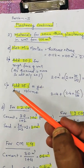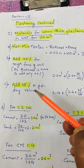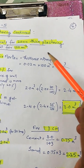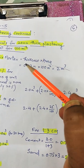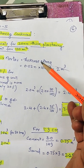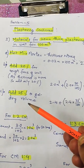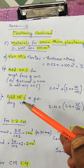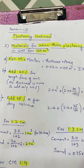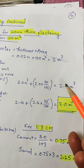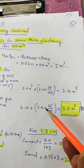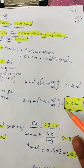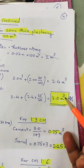The next step, step C, is to add 25% to get the dry volume. This is the wet volume as applied on the wall — it is fully consolidated after adding water. Before adding water, you need to account for bulking, so you add 25%, same as in 12mm plaster. So 2.4 cubic meters plus 25% comes out to a total of 3 cubic meters.